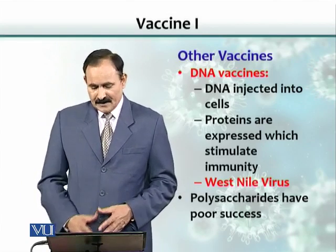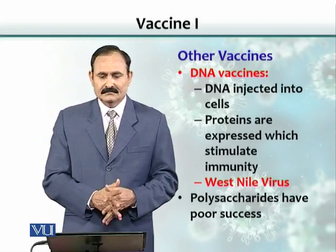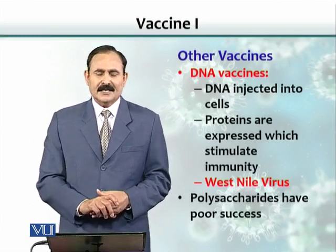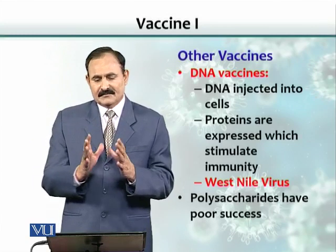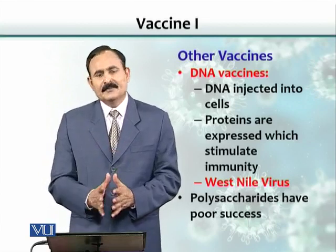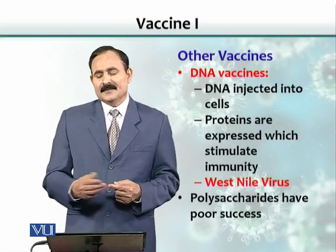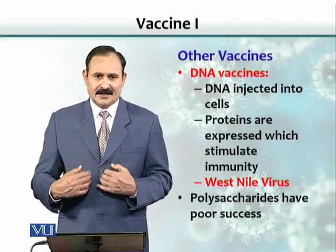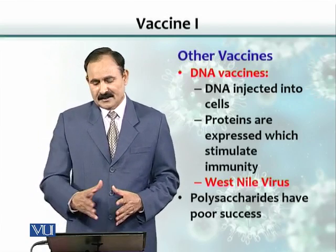West Nile virus is an example of a DNA vaccine target. Polysaccharides are not very good antigens because they cannot be transcribed — polysaccharides are built on a protein framework, and because polysaccharides of microbial origin are not present in mammals, they have poor success. Only protein-based vaccines can be made into DNA vaccines.